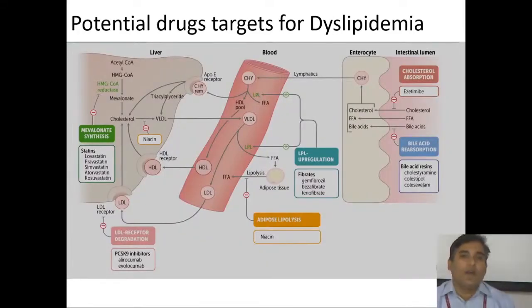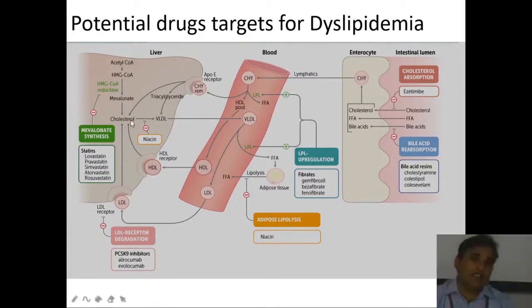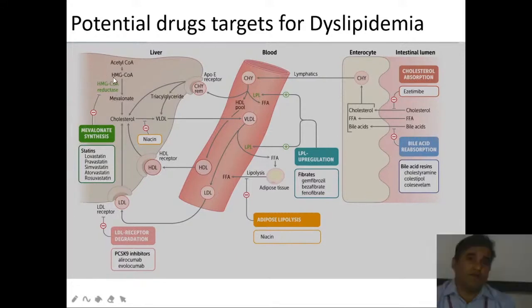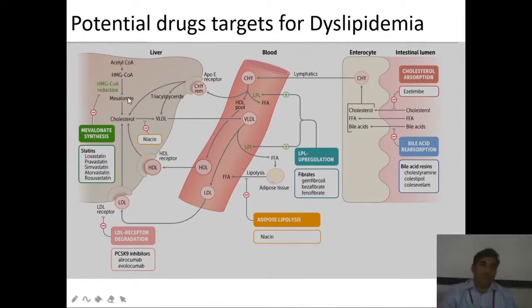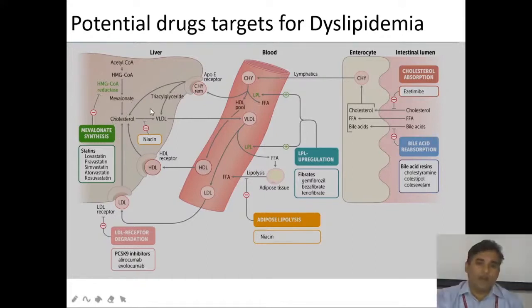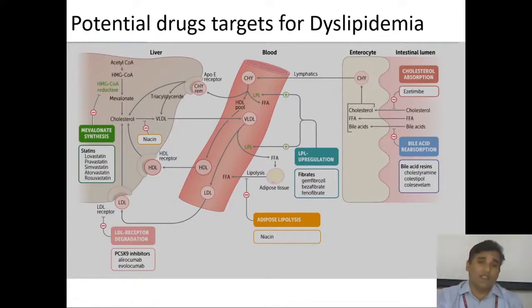Potential drug targets for dyslipidemia: cholesterol is synthesized from acetyl-CoA, and HMG-CoA reductase is involved in the conversion of HMG-CoA to mevalonate — this is the rate-limiting step. Drugs like lovastatin, simvastatin, and atorvastatin inhibit this conversion and therefore inhibit cholesterol synthesis. When cholesterol synthesis in the liver decreases, the formation and release of VLDL from liver to systemic circulation also decreases.